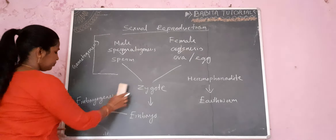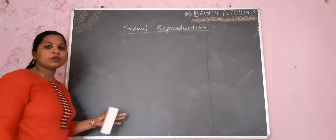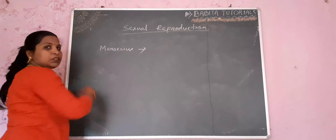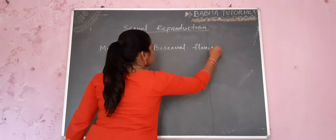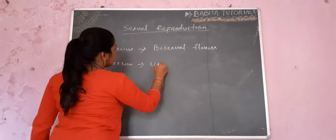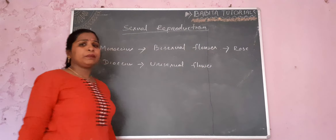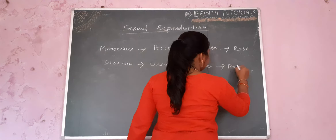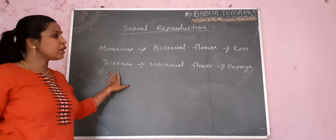Now, sexual reproduction in the case of flowering plants. In plants, both male and female are found in the same plant, and that plant is known as monoecious. The flower is a bisexual flower. In the case of dioecious plants, the flower is unisexual. For example, in rose flowers both male and female are found in the same plant, so it is monoecious. But in the case of papaya, the male-bearing plant is different from the female-bearing plant, so they are known as dioecious plants with unisexual flowers.